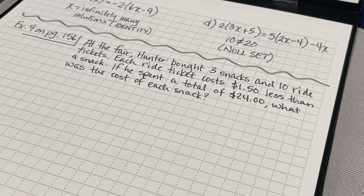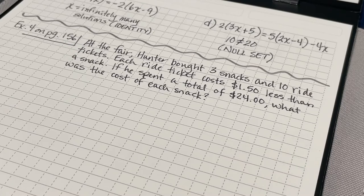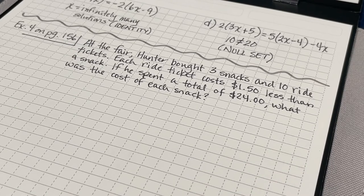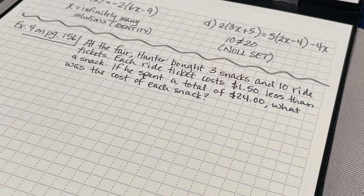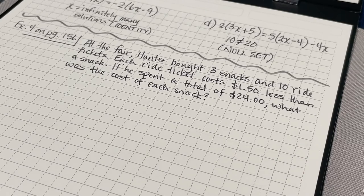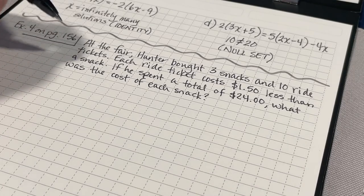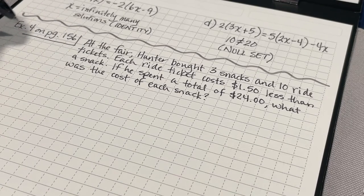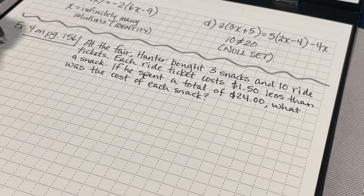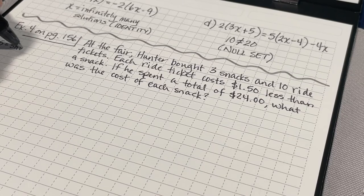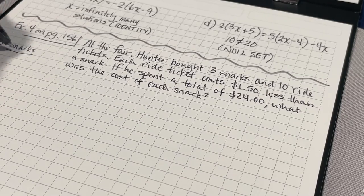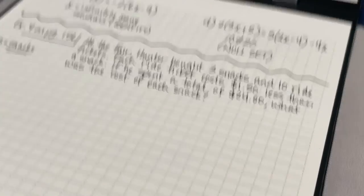Here's a fun problem. Hunter bought 3 snacks and 10 ride tickets at the fair. The ride tickets cost $1.50 less than the snacks. He spent a total of $24, and we want to find the cost of each snack. What I'm going to do is set this up as an equation. I'm going to identify my variable as being S for my snacks. That's the only variable I'm going to use. S equals snacks.